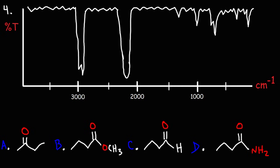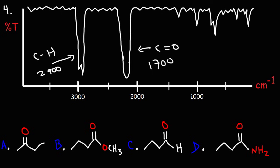Now let's move on to our fourth example problem. Looking at our answer choices, we have a ketone, an ester, an aldehyde, and an amide. We have an alkane C-H stretch with a signal around 2900 and a carbonyl C=O stretch at 1700 — those are the two main signals. Looking at answer choice C, we have an aldehyde — we don't see the aldehyde C-H stretch at 2700, so we can eliminate C. Looking at D, we have an amide — we don't see the signal for N-H₂, which should appear as a double peak around 3300 to 3500, so we can eliminate D.